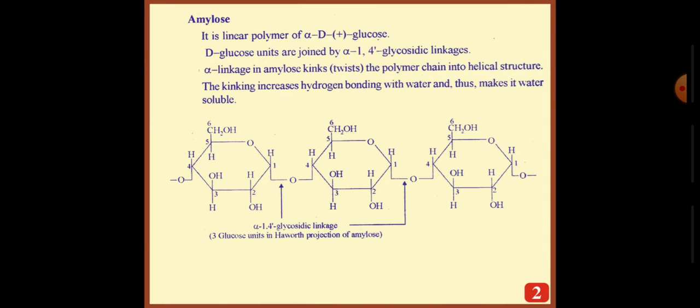Amylose is a linear polymer of alpha-D-glucose. D-glucose units are joined by alpha-1,4 glycosidic linkages. Alpha linkage in amylose twists the polymer chain into a helical structure. The linking increases hydrogen bonding with water and thus makes it water soluble. Due to the presence of hydrogen bonding, it is soluble in water.